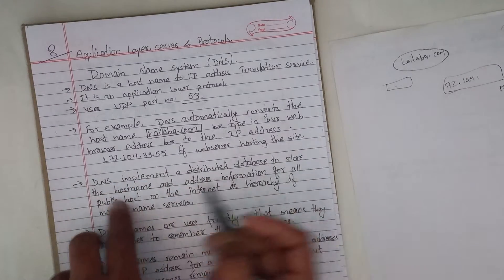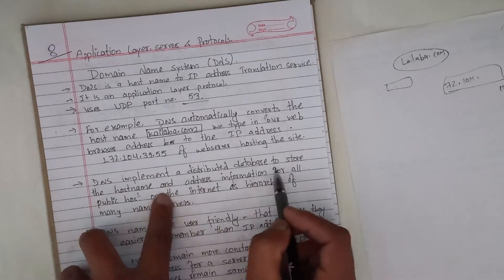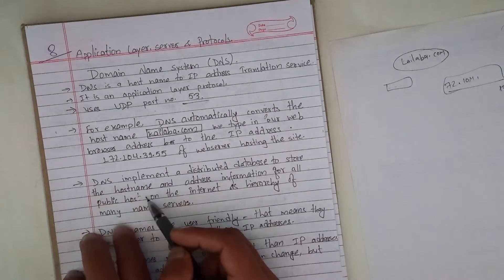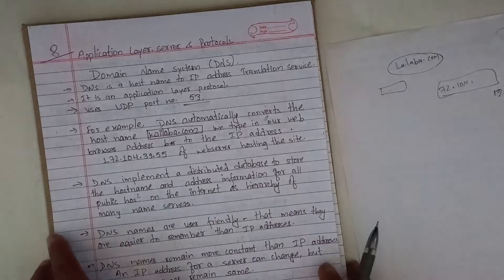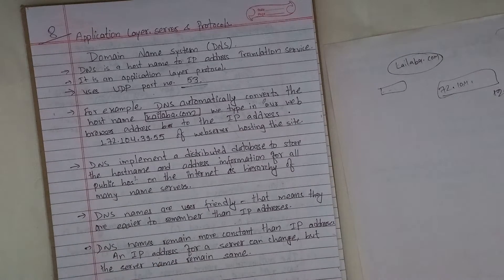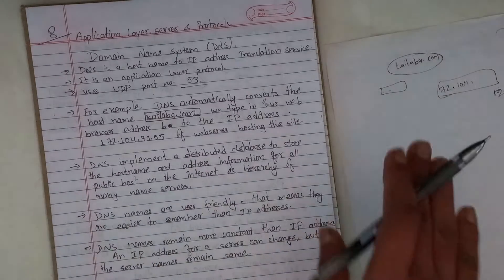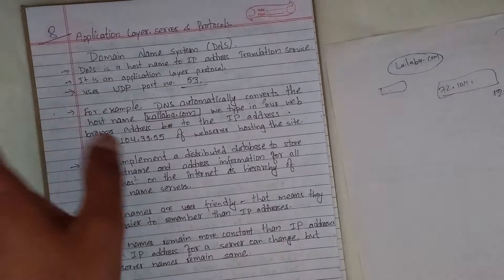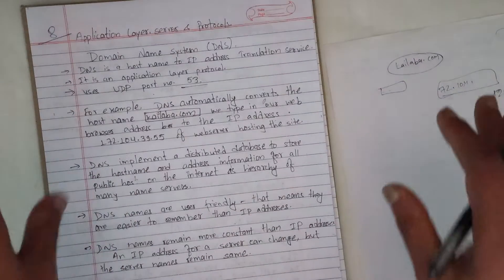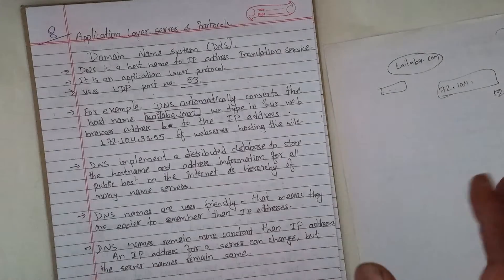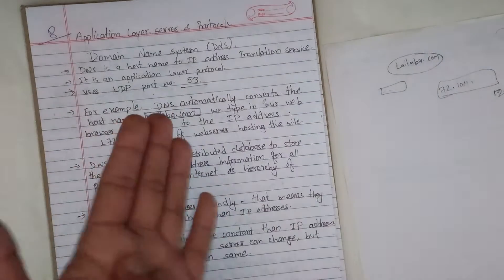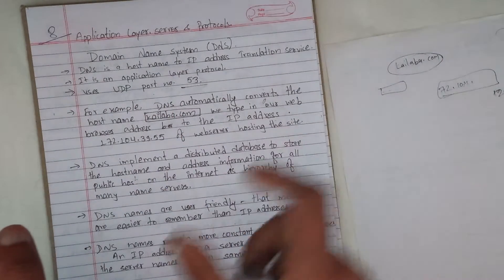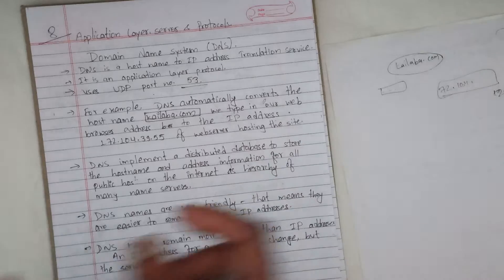DNS implements a distributed database to store the hostname and address information for all public hosts on the internet, organized as a hierarchy of many name servers. DNS is a distributed database that stores and manages IP addresses for domains like youtube.com and facebook.com.